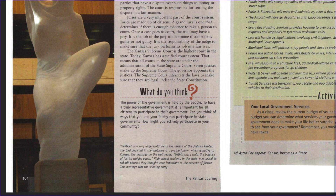Justice is a very large sculpture in the atrium of the Judicial Center. The bird depicted in the sculpture is a prairie falcon, which is native to Kansas. The message on the wall reads, 'Within these walls, the balance of justice weighs equal.' High school students in the state were asked to submit phrases that they thought were important to the concept of justice. This message was the winning entry.